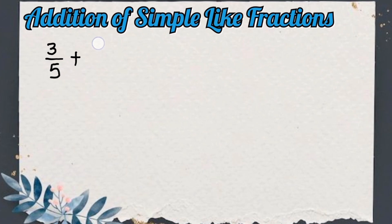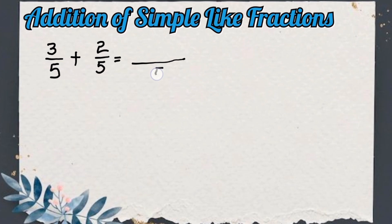And 2 by 5. In this fraction the denominators are the same, so what we have to do is only add the numerators. For the denominator we will write it as it is. So we will write 5 in the denominator and only add the numerators: 3 plus 2.